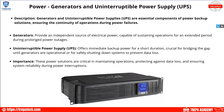If a hurricane hits a data center and we want backup power for at least four to eight hours while configuring a warm site, a generator is the choice. A UPS is an immediate backup power battery — at its strongest it typically provides about two hours, depending on energy consumption. A UPS offers immediate backup power and is especially good for rolling blackouts and brownouts.